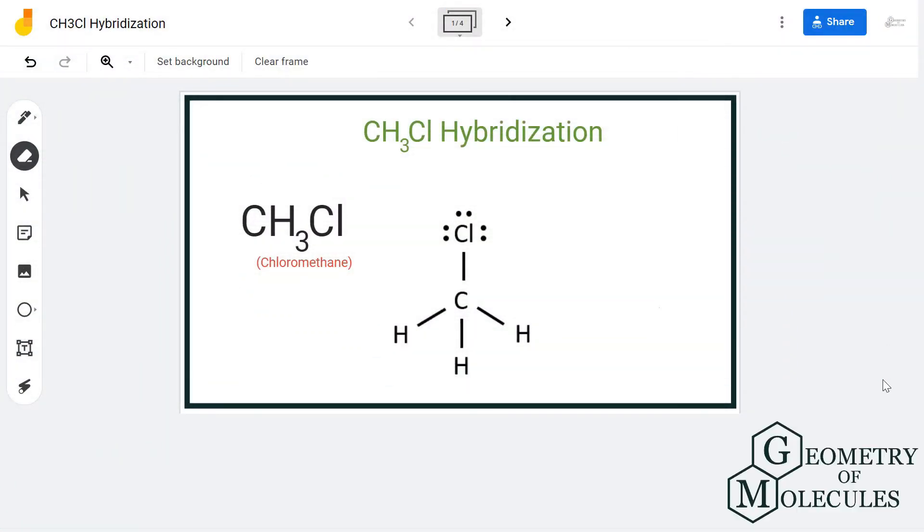Hi guys, today in this video we are going to look at the hybridization for CH3Cl molecule. It's a chemical formula for chloromethane and it is also known as methyl chloride. To determine this hybridization, we are going to look at its Lewis structure followed by the steric number.